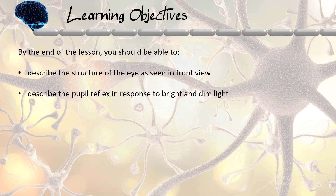First, we are going to learn about the structure of our eyes from the front view. The horizontal view we will learn in the next video, because all we need is the frontal view of the eyes to describe the pupil reflex in response to bright and dim light.